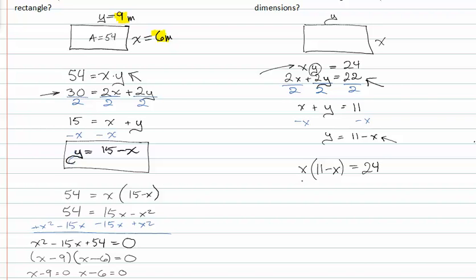Distributing my x, I get eleven x minus x squared equals twenty-four. Now I need to set it equal to zero and factor. Add x squared to both sides because I really like my x squared term to be positive, subtract eleven x from both sides.